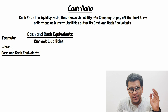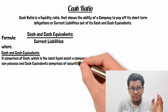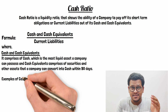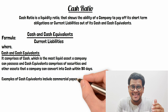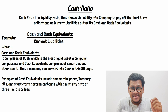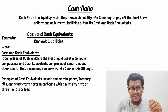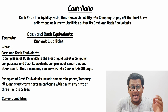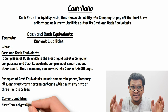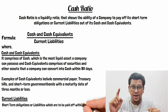Cash is the most liquid asset a company can have, and cash equivalents are those assets and securities that can be converted to cash within 90 days. These assets are so liquid in nature that they are considered as cash equivalents. Current liabilities, as we know, are those liabilities of a company which are to be paid off within one year.